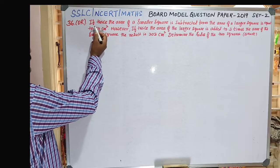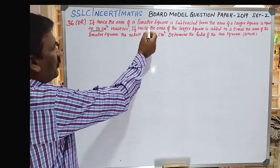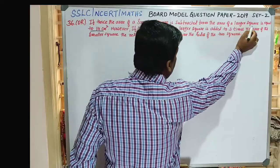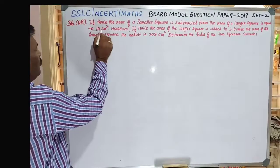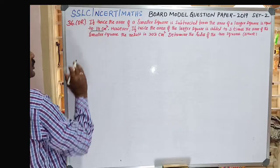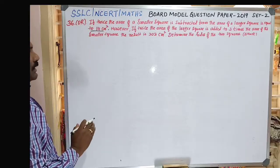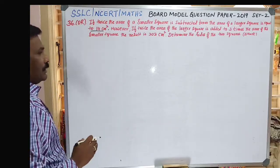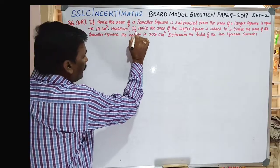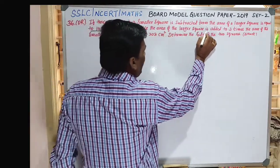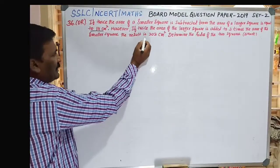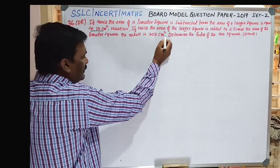The question says: if twice the area of a smaller square is subtracted from the area of a larger square, the result is 14 cm². This forms one linear equation in two variables. The second condition: if twice the area of the larger square is added to three times the area of the smaller square, the result is 203 cm².